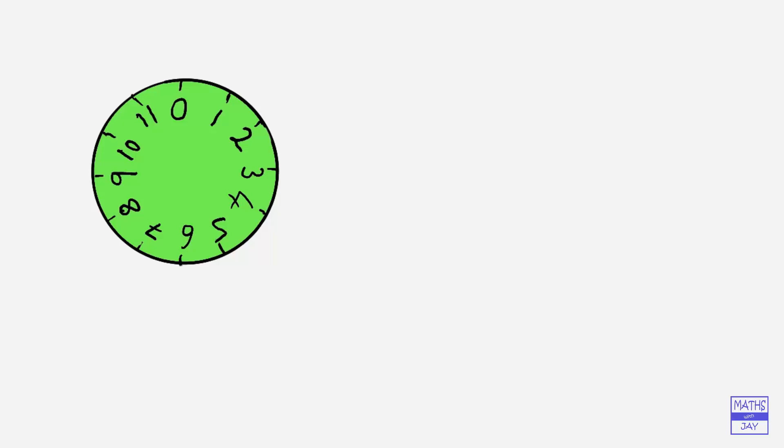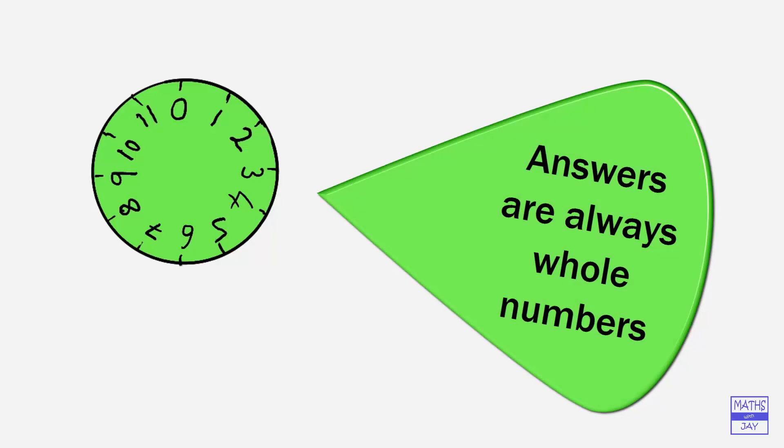One of the really good things about doing this kind of arithmetic is that our answers are always going to be whole numbers. So we'll have no fractions, no decimals, just whole numbers. And we try and avoid negatives as well. You'll see how this works when we look at some examples.